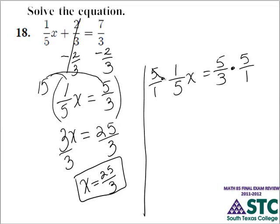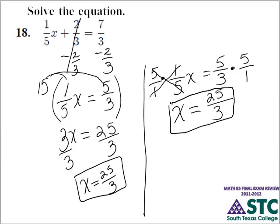On the left-hand side, the 5's and 1's cancel out. We're left with x equals 5 times 5 is 25, and 3 times 1 is 3. So our answer is x equals 25 over 3.